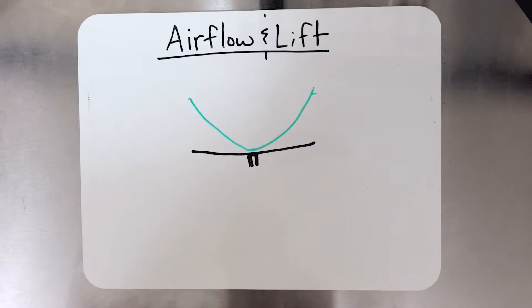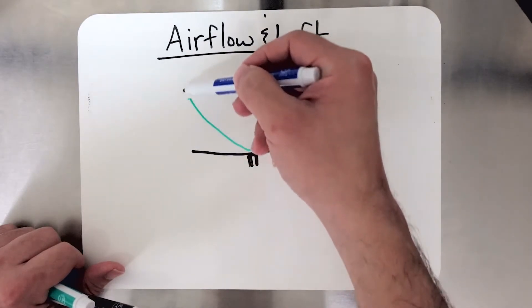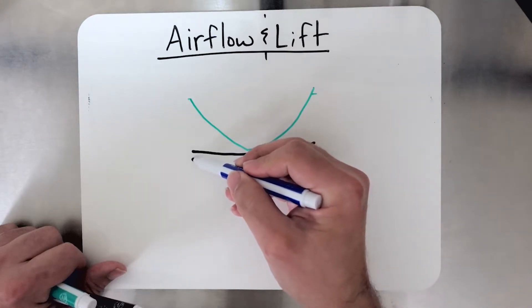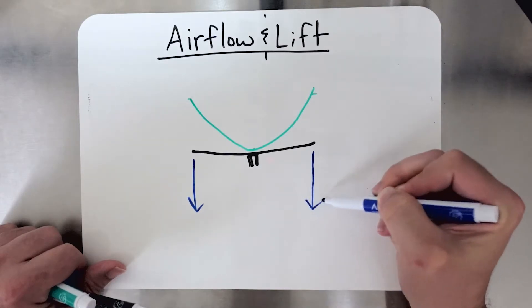Now, induced flow is proportional to velocity. What that means is that as velocity is very large at the tips, well, induced flow is very large at the tips as well in the downward direction.